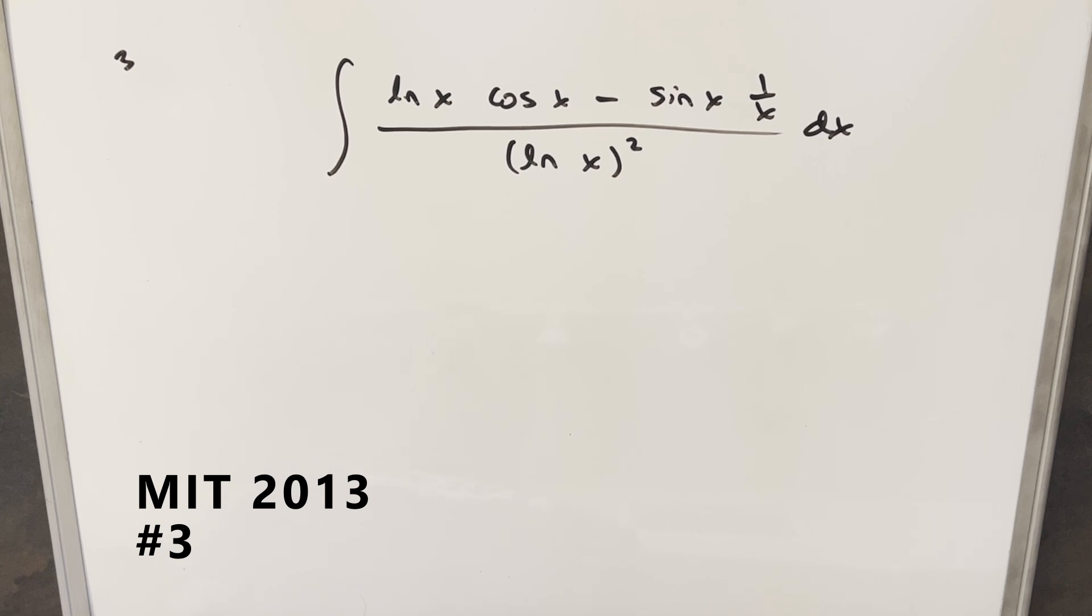We have the integral of natural log x cosine x minus sine x times one over x, all over ln x squared dx.